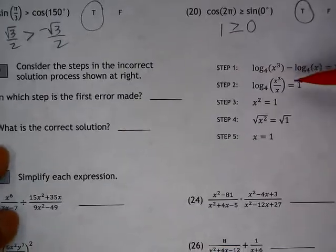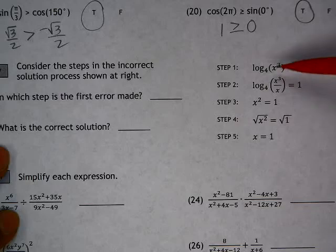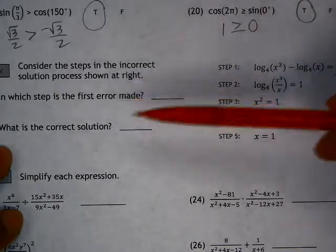All right, in problems 21 and 22, we're referring to the incorrect solution process that's shown here. And the first question is, in which step is the first error made?